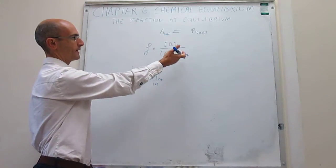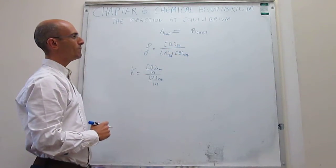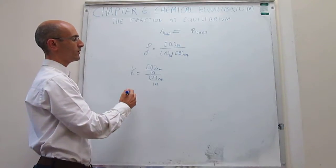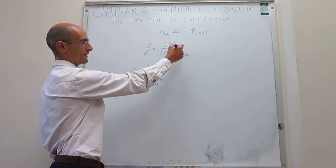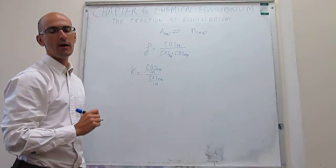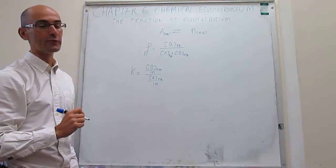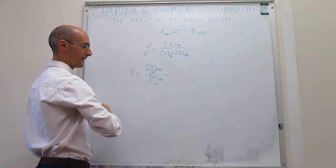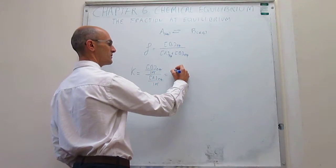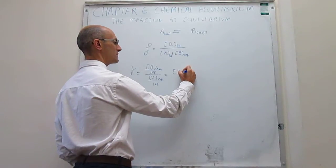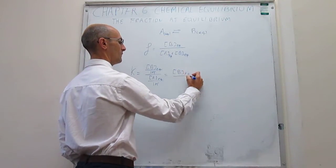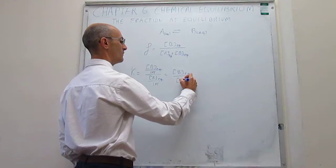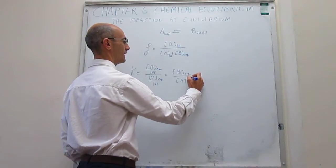We can actually, just for convenience, cancel out those reference concentrations, standard concentrations, and notice that the equilibrium constant turns out to be concentration of B at equilibrium over the concentration of A at equilibrium.